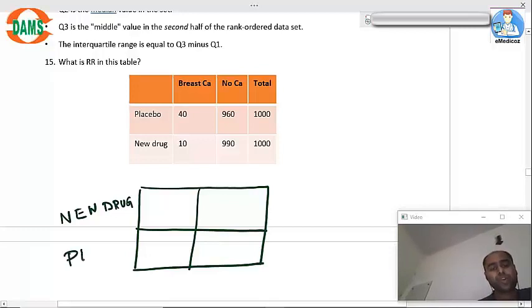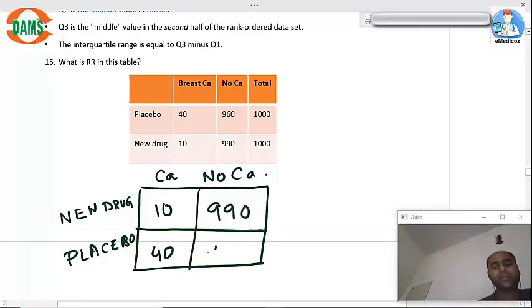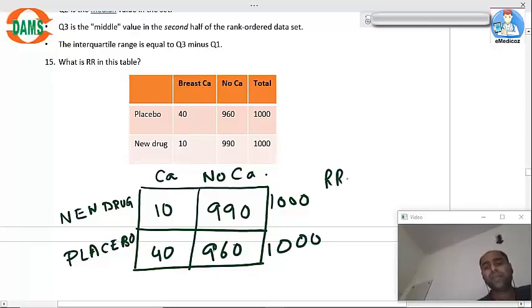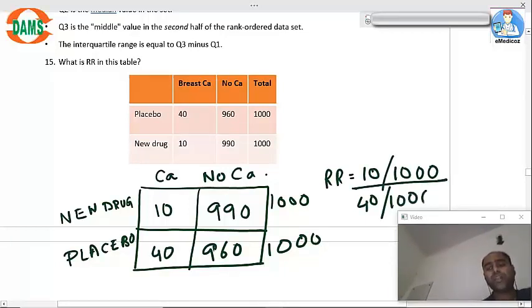Cancer, no cancer. So 10, 40, 990, 960, 1000, 1000. So relative risk will be 10 by 1000 divided by 40 by 1000. So 1 by 4, it will be 0.25.